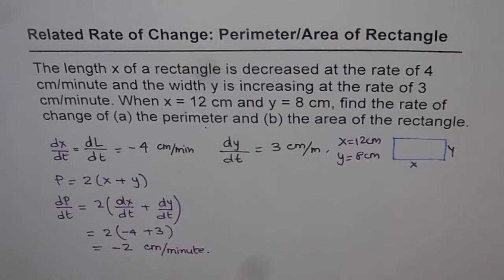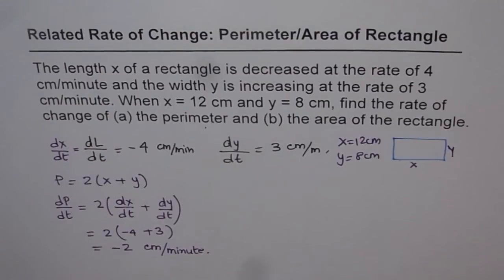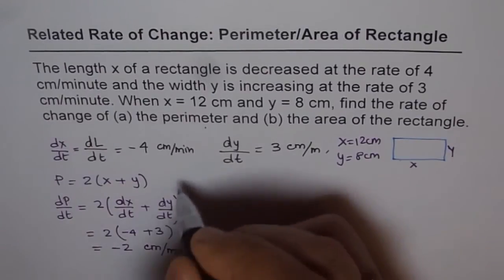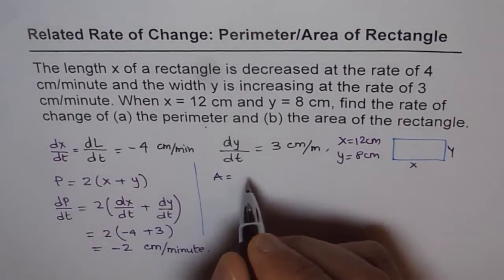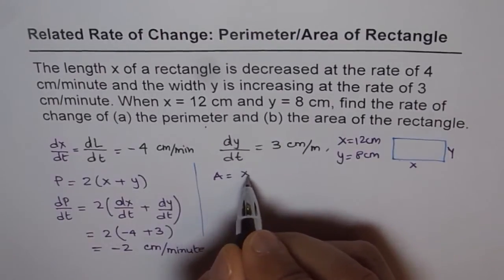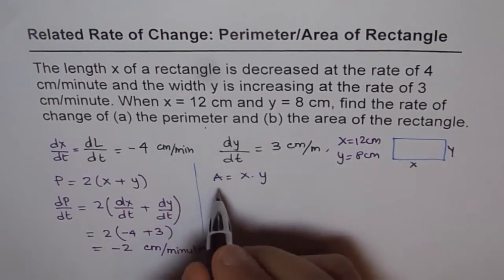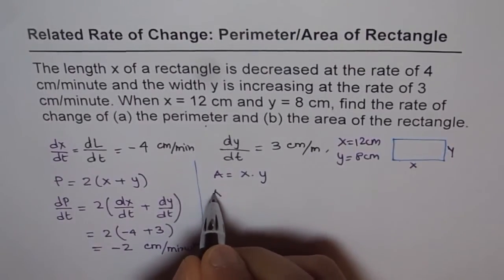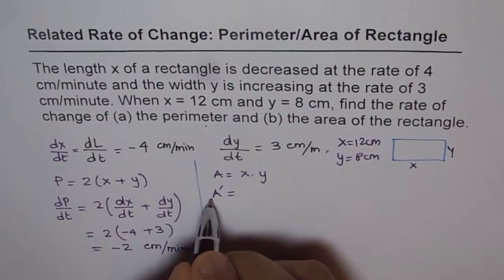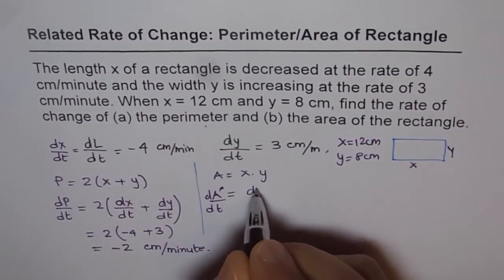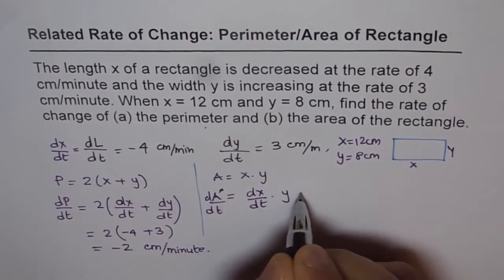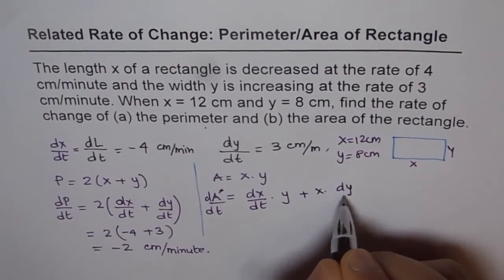At this instance of time, the perimeter is actually decreasing at the rate of 2 cm per minute. Now let's consider area. We know area equals length times width, that is x times y. We will use the product rule to find dA/dt. So dA/dt with respect to time will be dx/dt times y plus x times dy/dt.